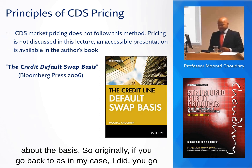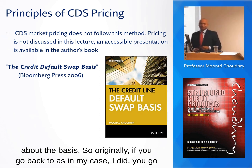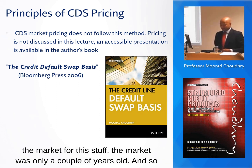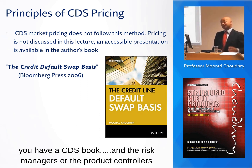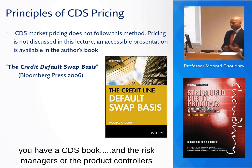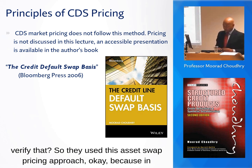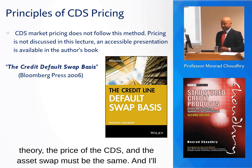Now let's talk about the basis. Originally, going back to — in my case — 1998, the market was only a couple of years old. You had a CDS book, and risk managers or product controllers wanted to verify that CDS price. The traders marked them at X — how could they verify it? So they used an asset swap pricing approach, because in theory the price of the CDS and the asset swap must be the same, and I'll explain why in a second.